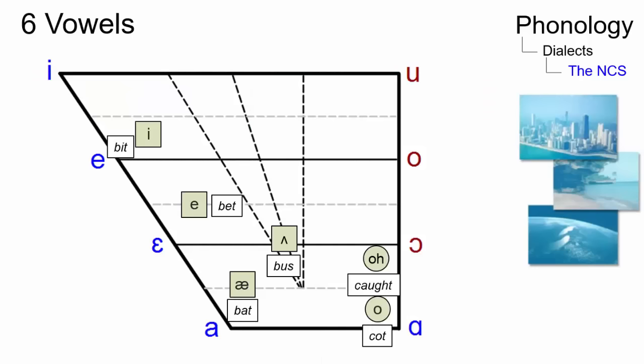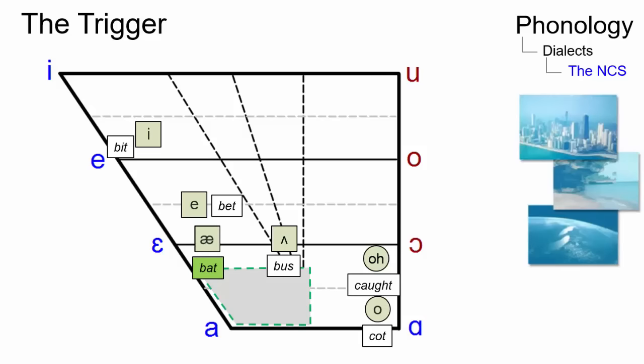In the Northern Cities Shift, six different vowels are affected. The first change in the shift was the raising and tensing of short A. This left an empty space in the low front position.